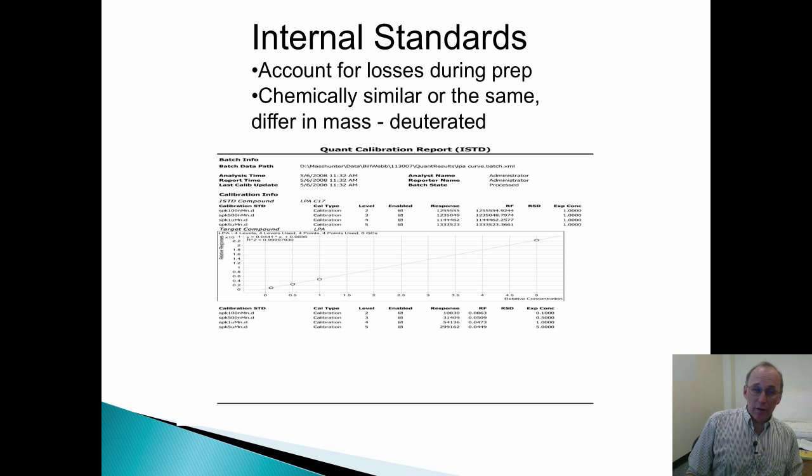By adding an internal standard, a compound which is completely the same or very similar to the compound that we're measuring but only differs in mass, those losses are taken into account because we don't look at the absolute area of the peak. We're now looking at the ratio of area of the compound of interest versus the internal standard. This often results in very nice linear calibration curves, further aiding in our confidence in getting at the accurate number of the compound present.